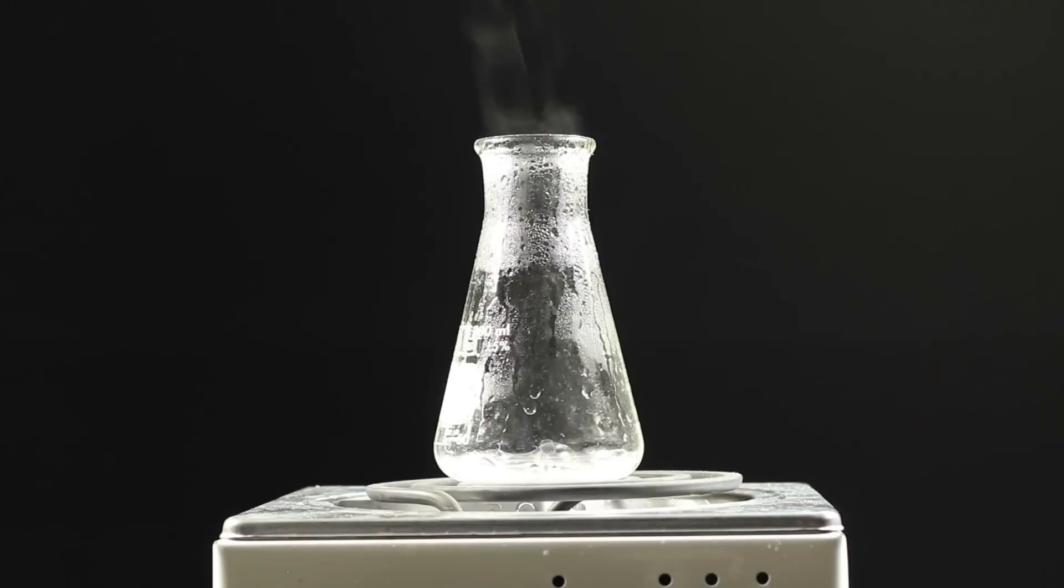Start with a bottle that has an opening just smaller than the size of your egg and then boil 3 tablespoons of water until steam is pouring off the top.